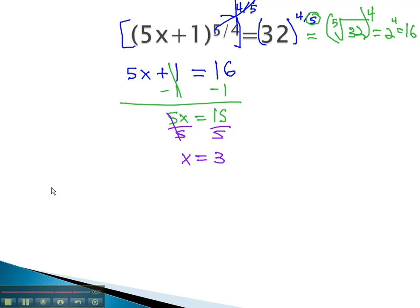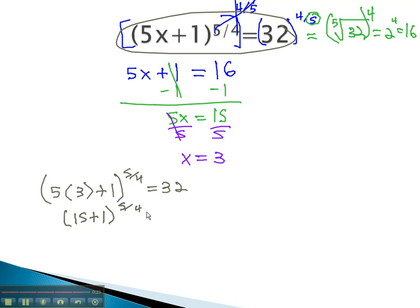To be sure, we will check our answer in the original problem. 5 times x plus 1 to the 5 fourths power will hopefully be 32. 5 times 3 is 15, plus 1 to the 5 fourths power will hopefully be 32. This means we have 16 to the 5 fourths, or the 4th root of 16 to the 5th power. The 4th root of 16 is 2 to the 5th power is 32. Our answer works.